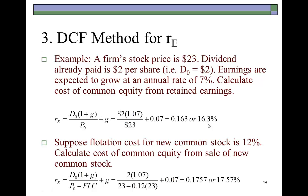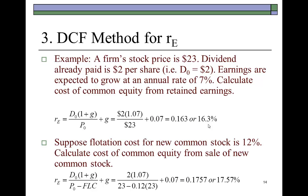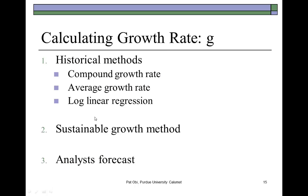The task in using this constant growth model is obtaining G, the growth rate. Typically, the growth rate refers to growth rates in the firm's earnings and dividends. There are also three methods to estimate that: one is to use historical data, two is the sustainable growth approach, and three is to simply look up the consensus view among analysts that follow that particular stock.